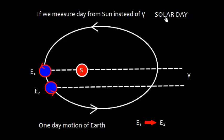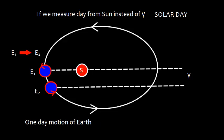So if we measure day from Sun instead of First Point of Aries, then we need to have this solar day. We call this as a solar day if we are taking a reference point as Sun. So here at E1, Sun is at the meridian at some meridian. However, when the earth has moved from E1 to E2, that is one day motion of earth, so the Sun is not at the same meridian at E2.